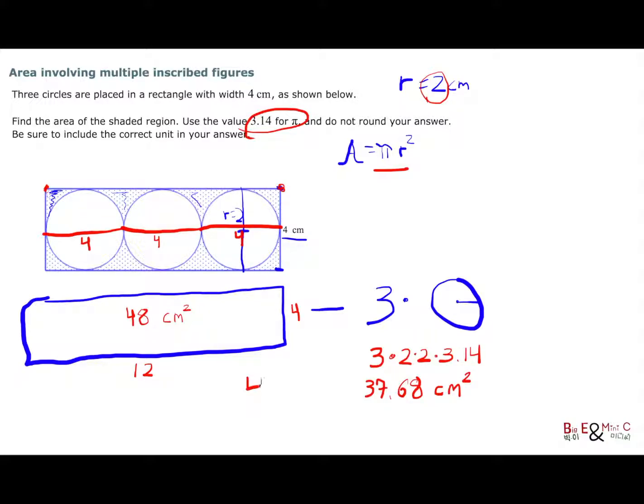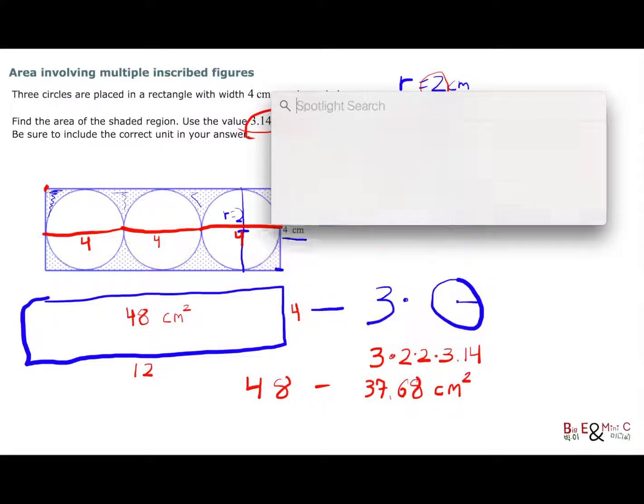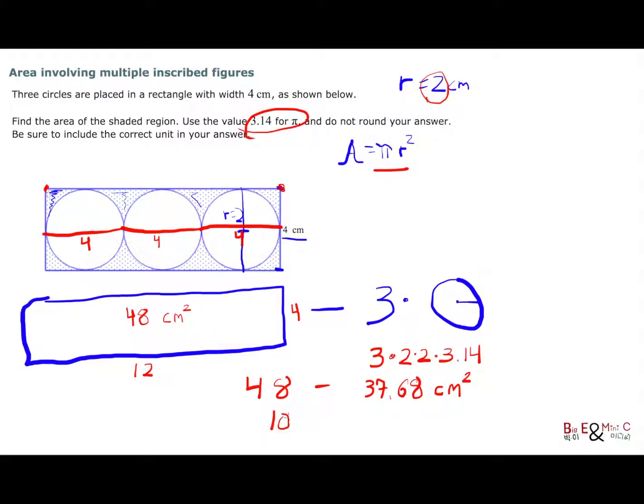So here, if I finish my equation, it's 48 minus 37.68. Just using the help of a calculator here to make this process go a little quicker, I end up with 10.32. So I end up with 10.32 centimeters squared. Excellentness. That is the answer.